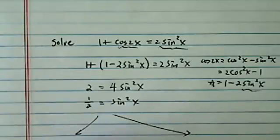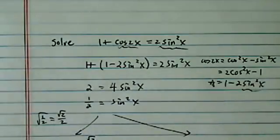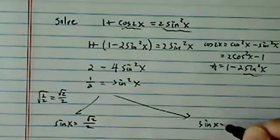So sine x is equal to radical 1/2, which is radical 2 over 2 if you rationalize it. The other half is sine x equal to minus radical 2 over 2.